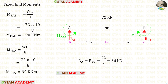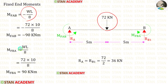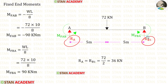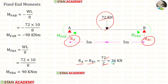Now let us find the fixed end moments and the vertical reactions. First, in span AB we have a point load of 72 kilo Newton acting at the center. The formulas to find the fixed end moments are minus WL upon 8 and positive WL upon 8. Here W is 72 and L is 10. After the calculation we get M_AB and M_BA. Since the loading is symmetrical, we find RA and RB1 by dividing the load 72 by 2, giving us 36 kilo Newton each.